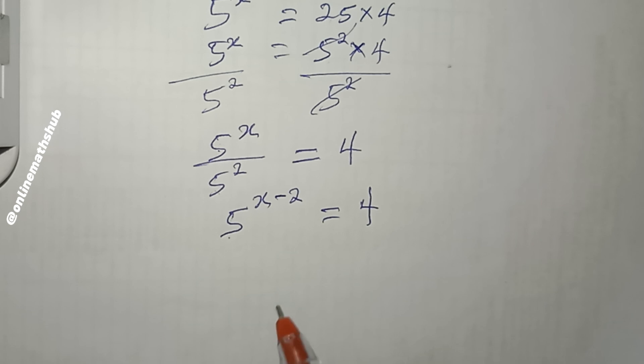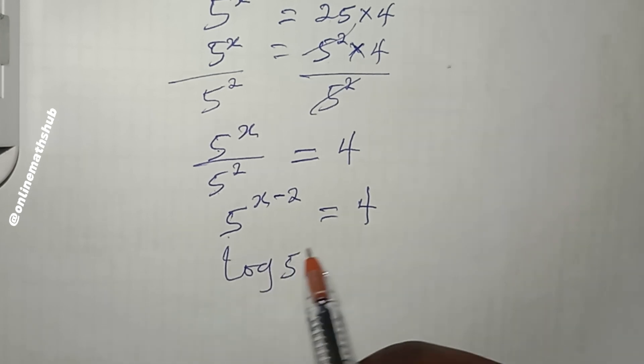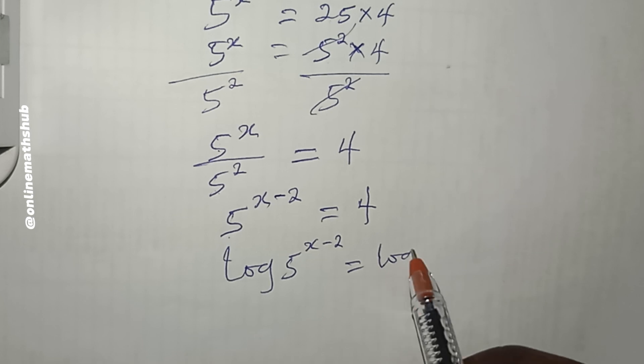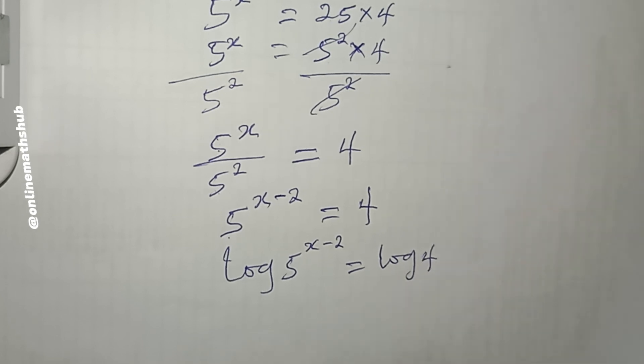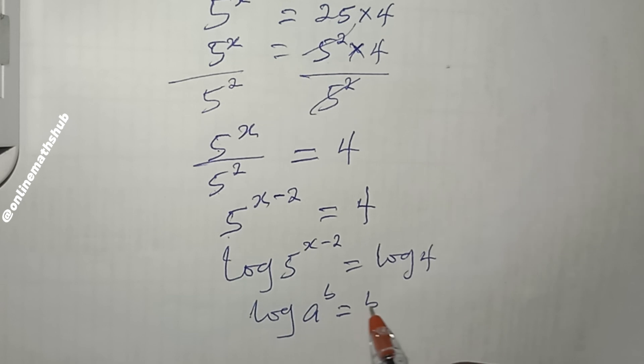What I'm going to do next is take the log of both sides. If I do that, I have log(5^(x-2)) = log(4). Utilizing a property of logarithm which says that if you have log(a^b), you can write this as b × log(a).